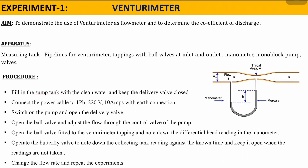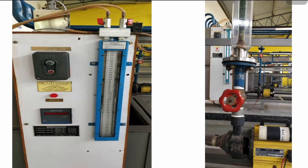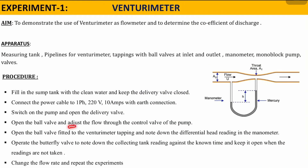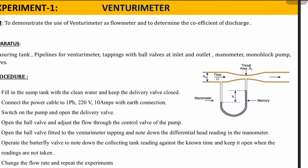Initially, fill the sump tank with clean water and keep the delivery valve closed. Next, connect the power cable to the pump, switch on the pump, and open the delivery valve to flow water inside the venturi meter through the pipes. Then open the ball valve at the inlet of the venturi meter and adjust the flow using the control valve. This control knob is used to adjust the flow of water through the pipe.